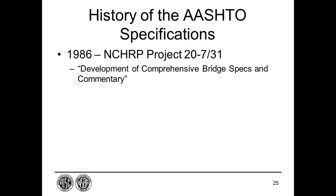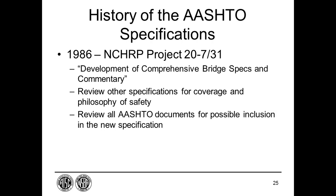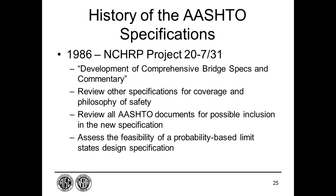In 1986, NCHRP Project 20-7 Task 31 was initiated at the request of AASHTO to investigate the development of a new comprehensive bridge specification with an accompanying commentary. By this time, the AASHTO standard specifications had undergone a number of revisions and had become somewhat disjointed and difficult to use, containing a number of inconsistencies. Additionally, commentary language to explain the provisions had never been provided. The firm of Majewski and Masters was selected. Tasks included reviewing other specifications, reviewing all AASHTO guide documents, assessing the feasibility of a probability-based design specification, and preparing an outline of a revised AASHTO specification.